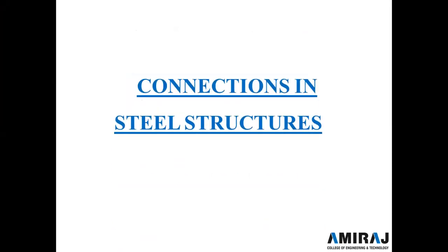Good morning students. We move further to another chapter which is bolted connections. A steel structure is assembled by connecting different members such as beams, columns, tension members etc. Many members in a steel structure are made of different components such as angles, plates, channels, I-sections etc. These different components have to be connected by means of fasteners like bolts, rivets, or welds. Connections between different members facilitate the flow of forces and moments from one member to another.